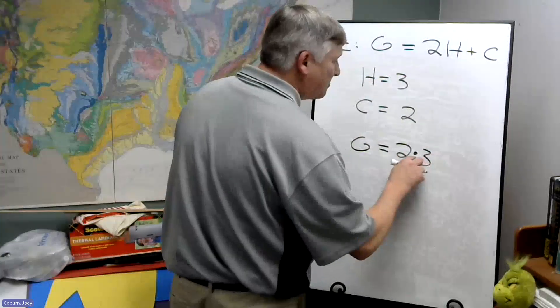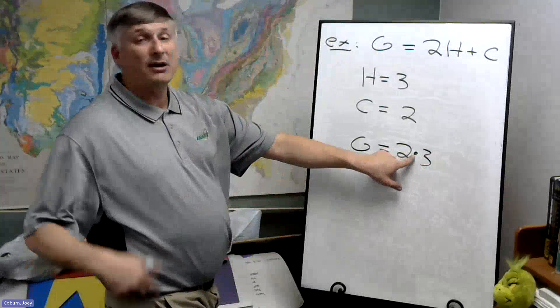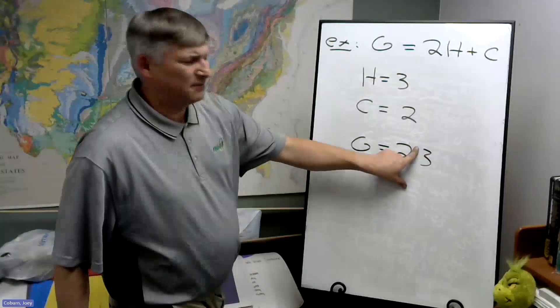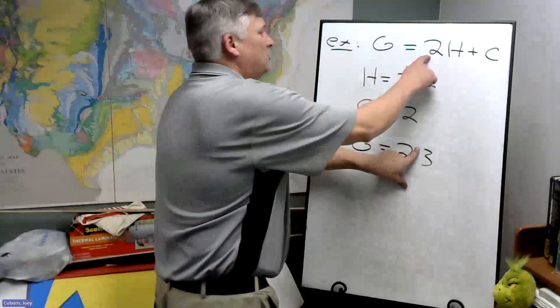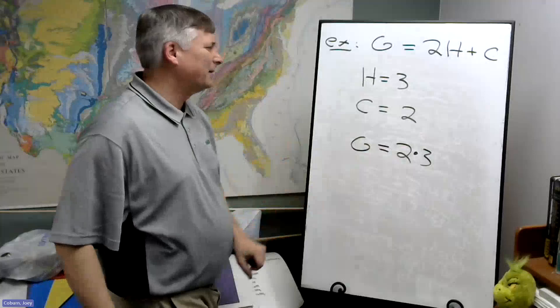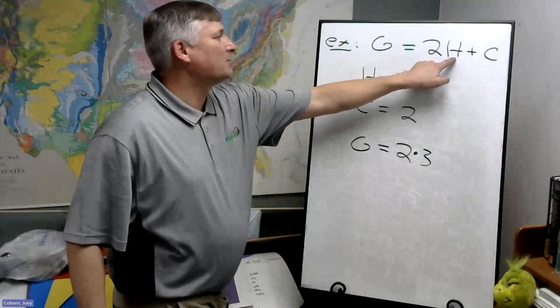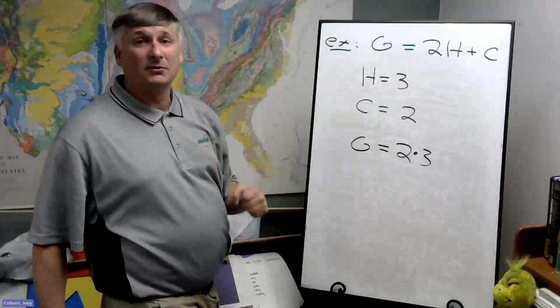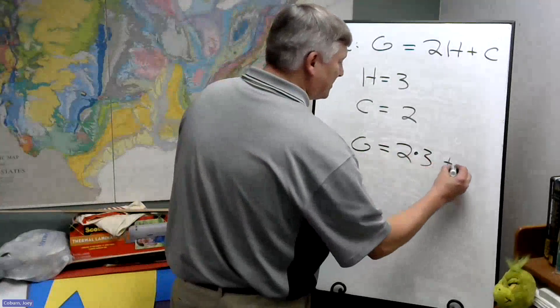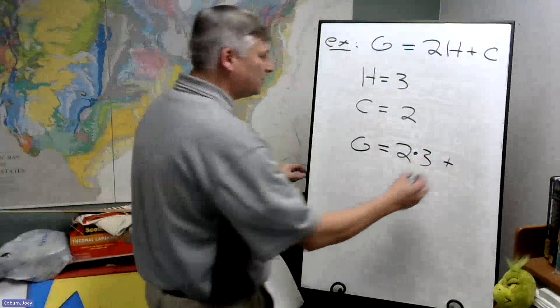that's when we make sure the multiplication sign becomes visible. If we don't, we get 23, and that's not what we want. We want 2 times whatever choice we made, not the number 23. We want 2 times 3, since we're choosing H to be 3. 2 times 3 plus, and then the number we chose for C was 2.